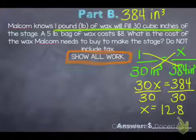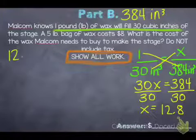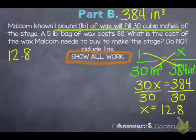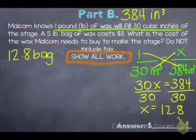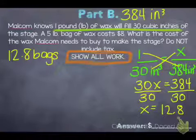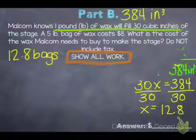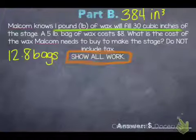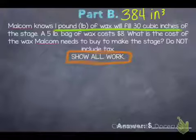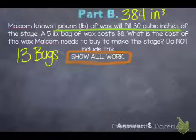What does 12.8 mean? It means to fill our entire stage we need 12.8 pounds of wax. But we can't buy 12 and eight-tenths of a pound. We have to buy them in whole pound increments. So we wouldn't buy 12 pounds; we'd buy 13 pounds. We need 13 pounds total.